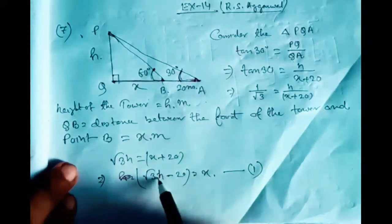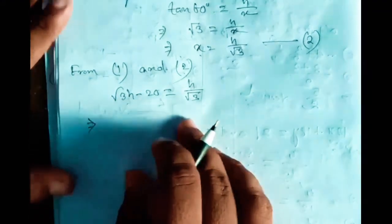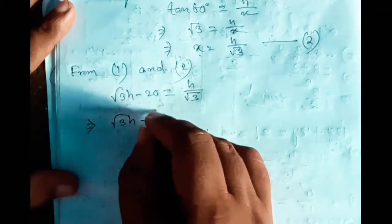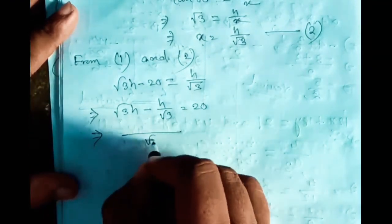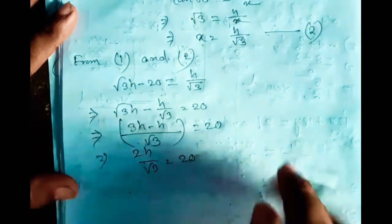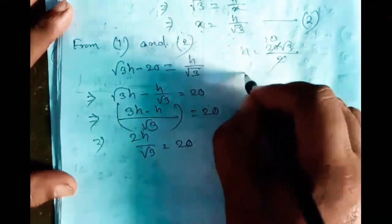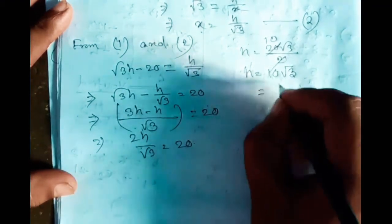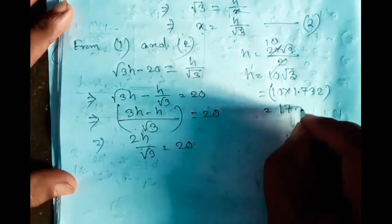From equations 1 and 2, substituting X equals H by root 3 into root 3 H minus 20 equals X, we get root 3 H minus 20 equals H by root 3. Solving: root 3 times root 3 H minus H equals 20, so 3H minus H equals 20, giving 2H by root 3 equals 20. Therefore H equals 20 root 3 by 2, which is 10 root 3, approximately 17.32 meters.